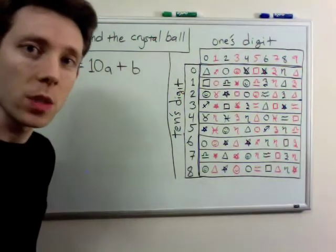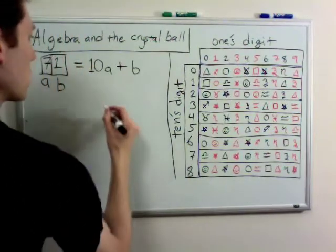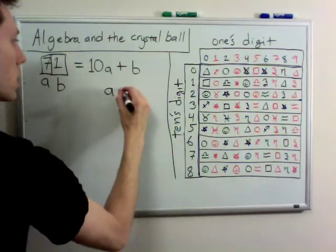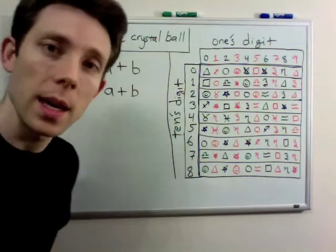Now, I have to add up the two digits. The digits are just a and b. So, when I add up the two digits, I can just write it as a plus b.